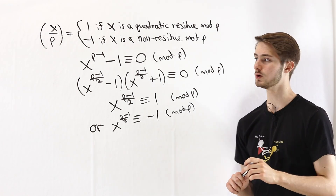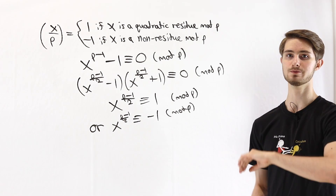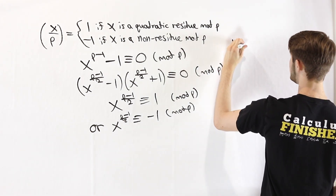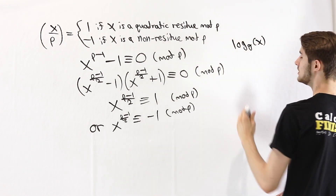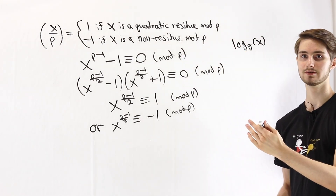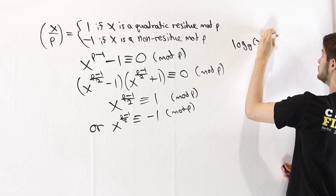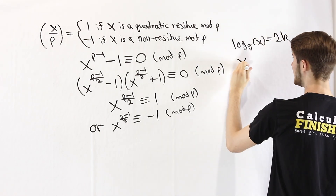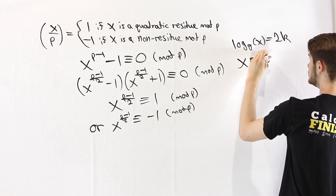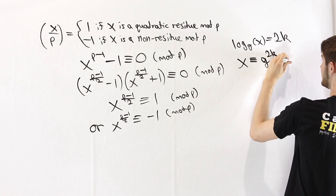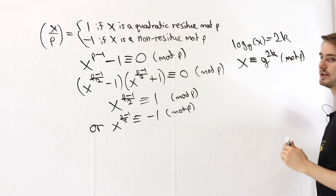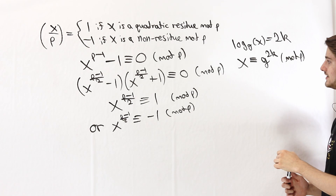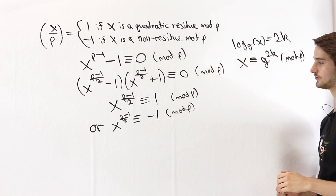First, let's think about what happens if x is a quadratic residue mod p. In that case, the log base g of x — the index of x — would have to be even. If it's even, we can write it as 2 times some integer k. So x is congruent to g^(2k) mod p, by the definition of an index relative to g.